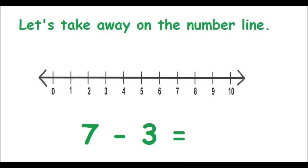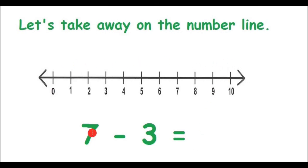So boys and girls, let's try one more example. Let's read our number sentence: 7 take away 3 is equal to something. We know because we are taking away, we are going to be moving backwards on our number line. We will look for the number 7 as it's our first number in the problem. We will be jumping backwards 3 times as we are taking away. So here is number 7 on our number line.